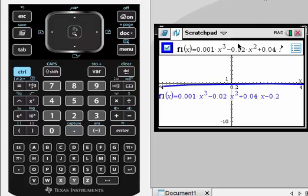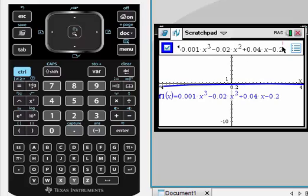In this video, I'm going to show you how to adjust the window settings in order to view a greater portion of the curve. For example, I tried to graph 0.001x³ - 0.02x² + 0.04x